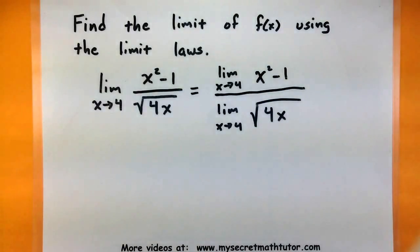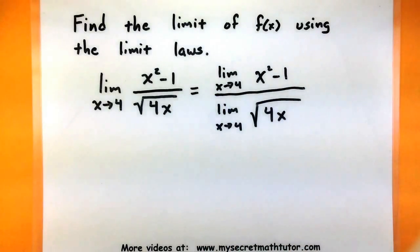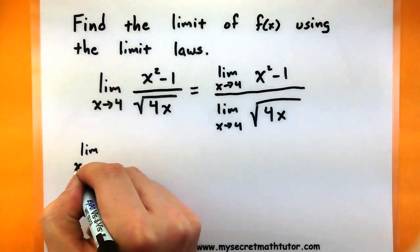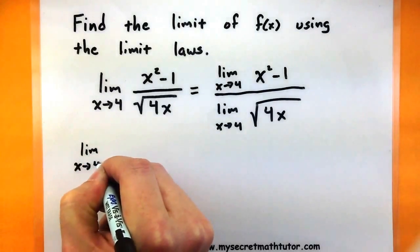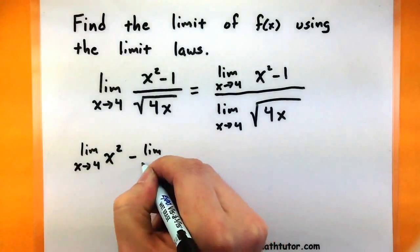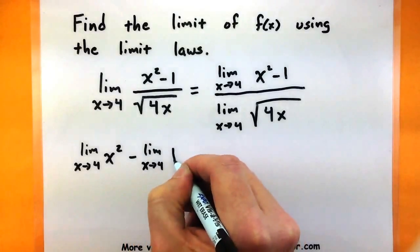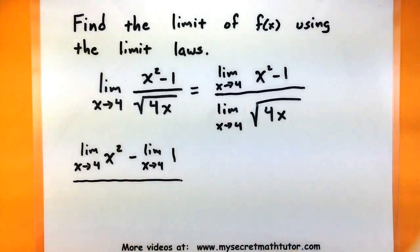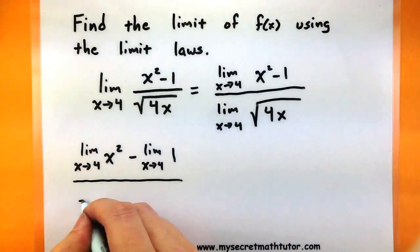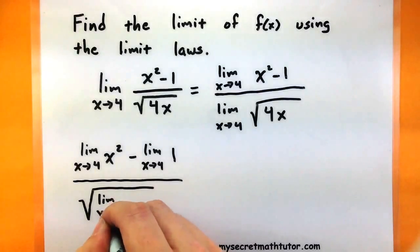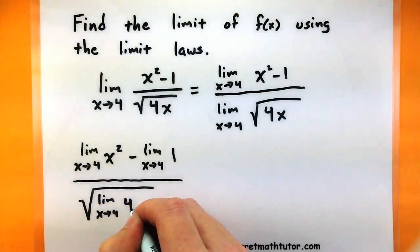Now I don't necessarily have to worry about fractions, instead I just have to take the limit of the top piece and the limit of the bottom. Now I can use the difference law on top to actually take the limit as x approaches 4 of x squared and also the limit as x approaches 4 of 1. So now I'm taking the limit of those individual pieces. On the bottom I can use my root law to take the limit as x approaches 4 of 4x.